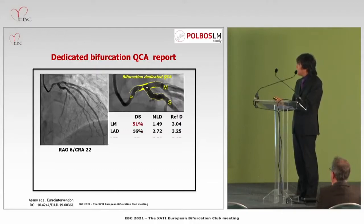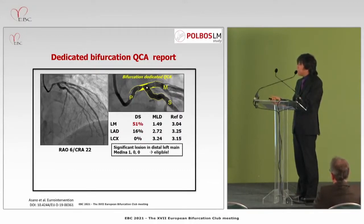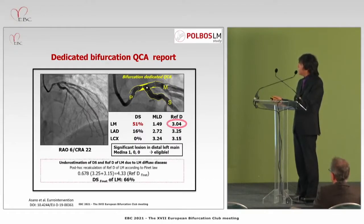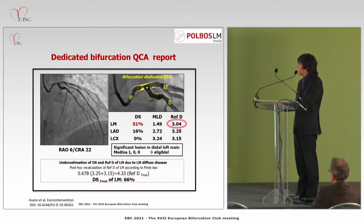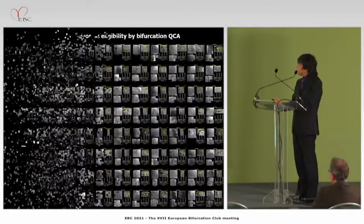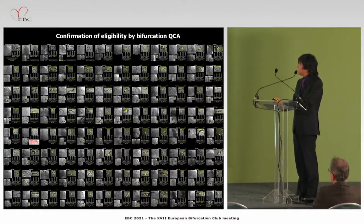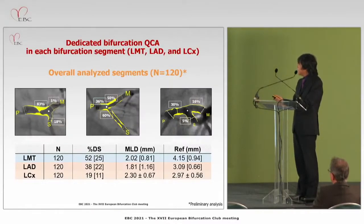In one actual case example: diameter stenosis was 51%, left main reference vessel diameter was 3mm. However, looking at the main branch and side branch, the reference vessel diameter was actually larger — 3.25mm for the LAD and 3.15mm for the circumflex. Using the Finet Law equation, the reference vessel diameter was 4.33mm and diameter stenosis according to Finet Law was 66%. In the 120 cases analyzed: left main diameter stenosis averaged 52%, MLD was 2.02mm, reference vessel diameter was 4.15mm.